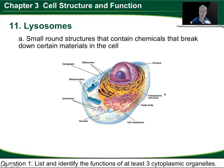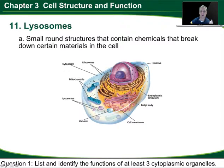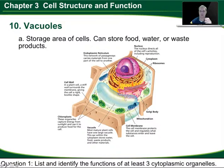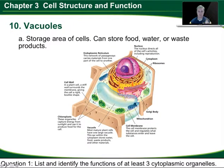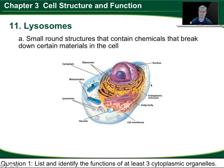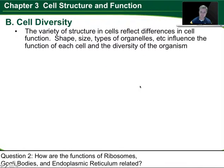Those are basically the major cytoplasmic organelles. To review: we started with the nucleus, found in both plants and animals, then the endoplasmic reticulum, the Golgi bodies, the ribosomes, the mitochondria, the vacuoles, and the lysosomes. In plant cells, we would also include the central vacuole, the chloroplast, the cell wall, and the cell membrane — all of these together make up the variety of cell structures.